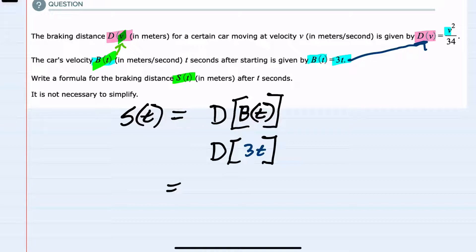So this will be, instead of v squared, it'll be 3t squared over 34. We're told that it's not necessary to simplify, so we could stop here and say this is our new breaking distance function, s of t.